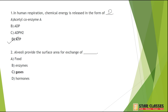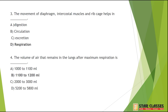Question number 2: Alveoli provide the surface area for exchange of — we are reading the chapter on respiration and circulation, so it cannot be food, enzyme, or hormones. The answer is only Gases.